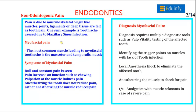Pain of non-odontogenic origin includes pain due to musculoskeletal origin — muscle, joint, ligaments, or deep tissues — felt as tooth pain. There can be toothache due to myofascial pain, with pain in the masseter and temporalis muscles. In myofascial pain, pain is dull and constant. On functioning like chewing, palpation of muscles induces pain. Anesthetizing the tooth does not reduce pain, but when anesthesia is given to the muscles, pain is reduced.